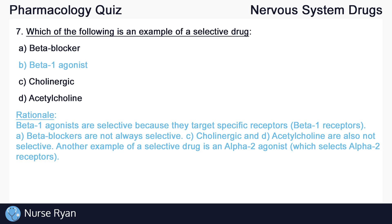A, beta-blockers are not always selective. C, cholinergic and D, acetylcholine are also not selective. Another example of a selective drug would be an alpha-2 agonist, which would select and activate alpha-2 receptors.